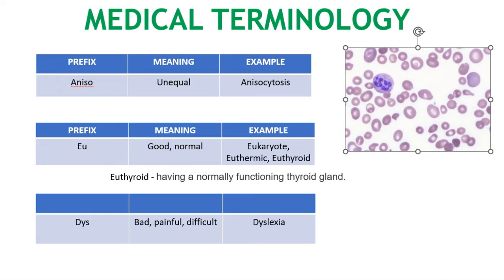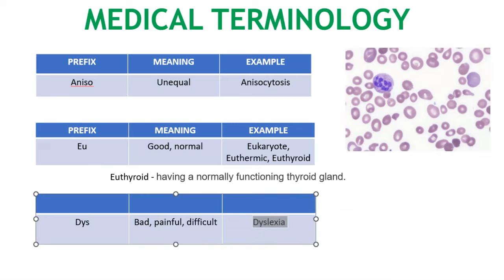Dys means bad, painful, or difficult. Dyslexia is an example — we can see this in children. Some children write letters in the opposite format, and a few people react very slowly to certain functions. So we use dyslexia in that context, and it is very much related to children.